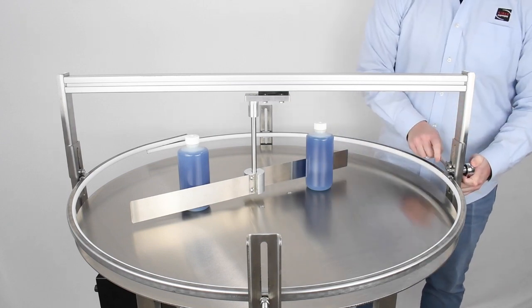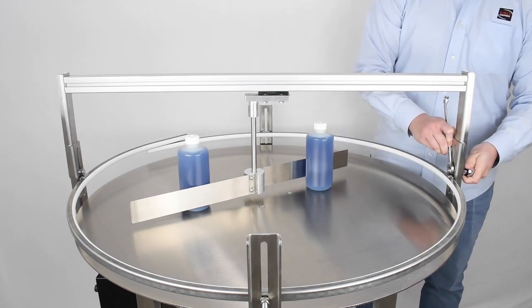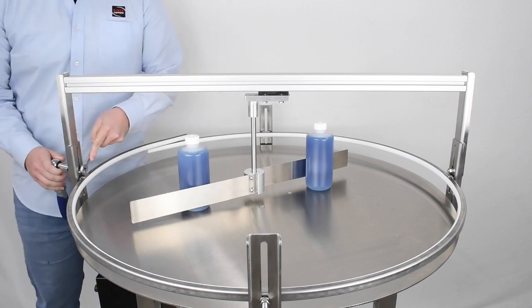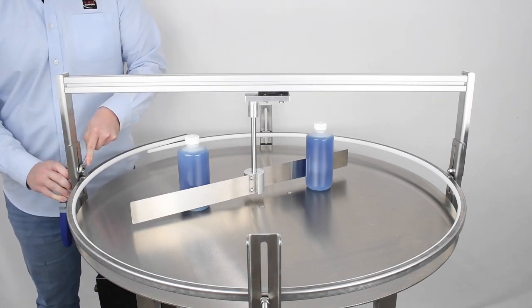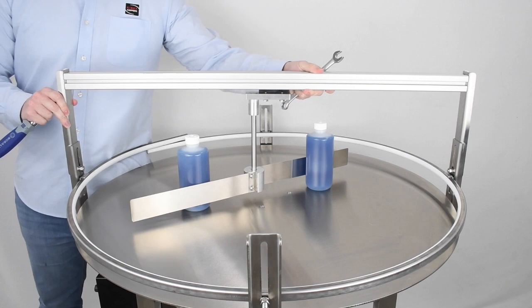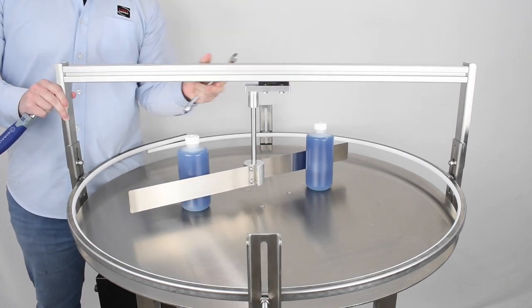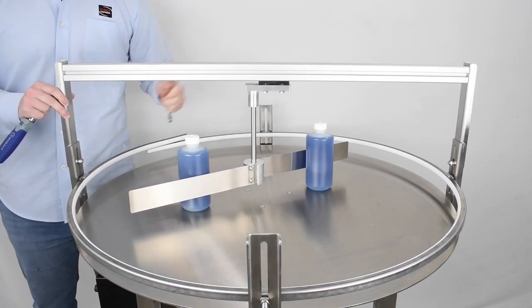The height of the unscrambler bar can be adjusted by loosening, not removing, the screws holding the post extensions in place using the half-inch wrench and socket. Once loose, you can move the unscrambler bar up and down through the slots, positioning one side at a time as needed.